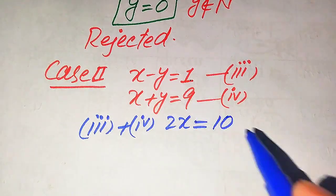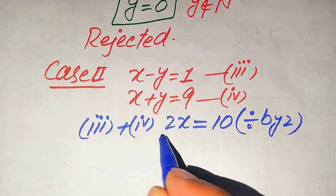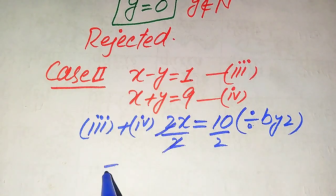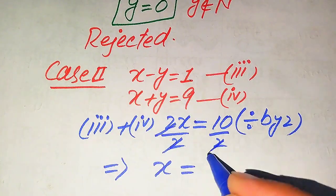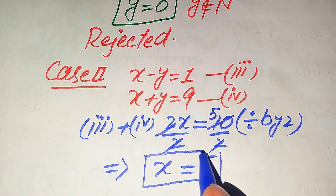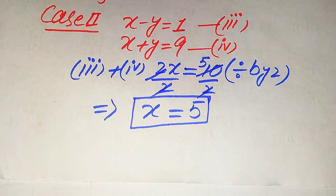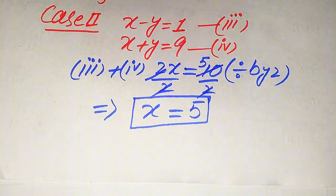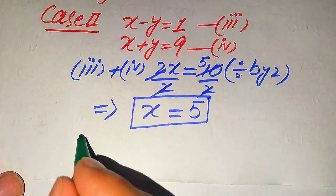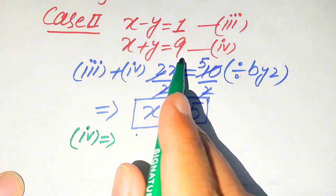We get 1 plus 9 equals 10, so 2x = 10. Dividing both sides by 2, the 2s cancel and we get x = 5. Now to find the corresponding value of y, we use equation 4: x plus y = 9.